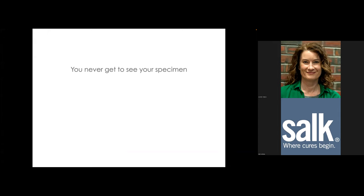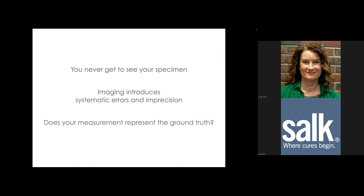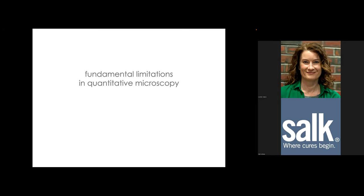You never get to see your specimen — you only ever see an image of your specimen that is generated by the microscope. Because the microscope has sources of inaccuracy and imprecision, you constantly have to worry about whether the measurements you're making actually represent the ground truth. If you're not paying attention, there's a very good chance a source of inaccuracy or imprecision is compromising your measurements.